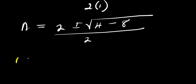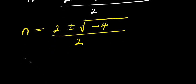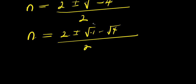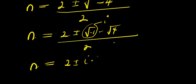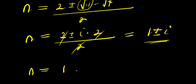From here, n equals 2 plus or minus square root of negative 4, divided by 2. We split the square root of negative 4 as square root of negative 1 times square root of 4. Since square root of negative 1 is i, we have n equals 2 plus or minus i times 2, divided by 2, which simplifies to n equals 1 plus or minus i. So we have two complex solutions: n equals 1 plus i, and n equals 1 minus i.